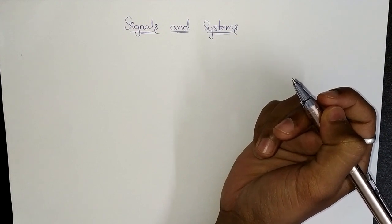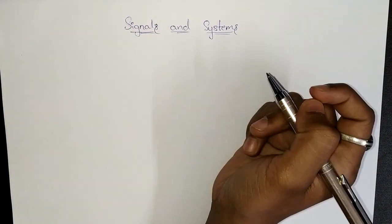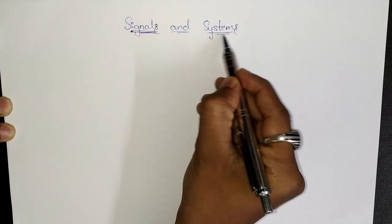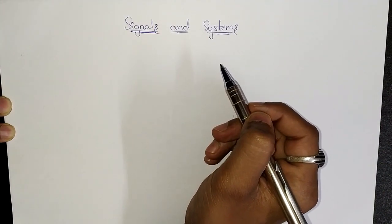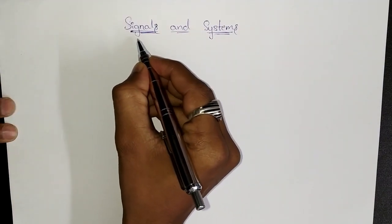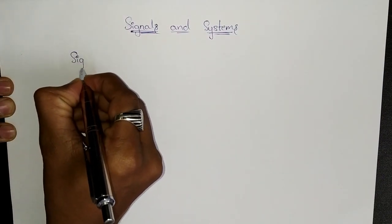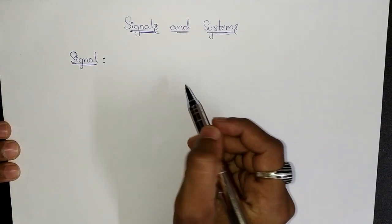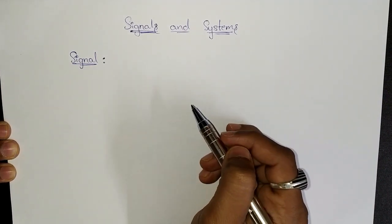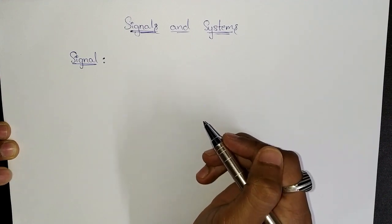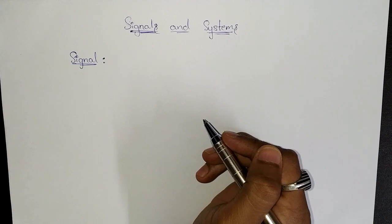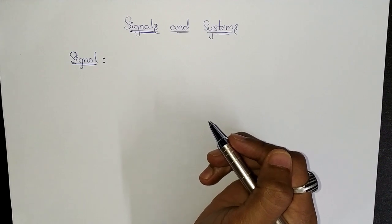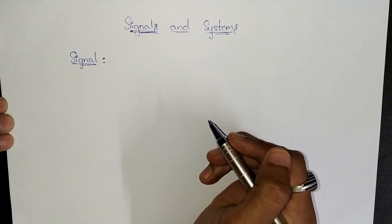The basic concepts that we need to discuss in this topic: first, what is a signal, and thereafter we are moving on to systems. Let us discuss what is a signal. A signal is a physical quantity — we can say a signal is a physical quantity which conveys information. It may be any physical quantity; it may be visual or it may be an audio signal, or anything which conveys information. We call it a signal.